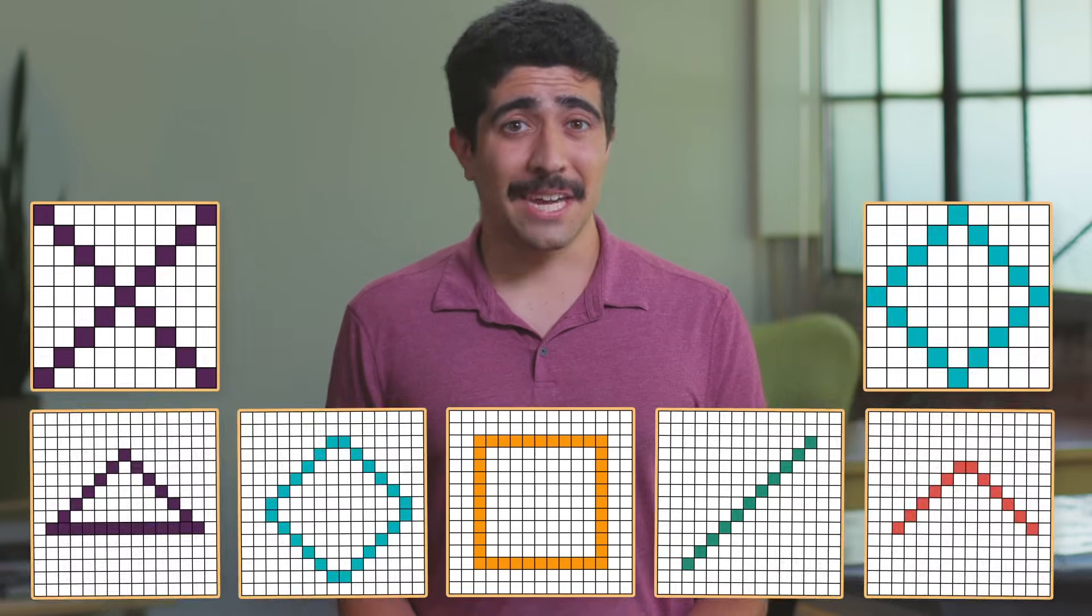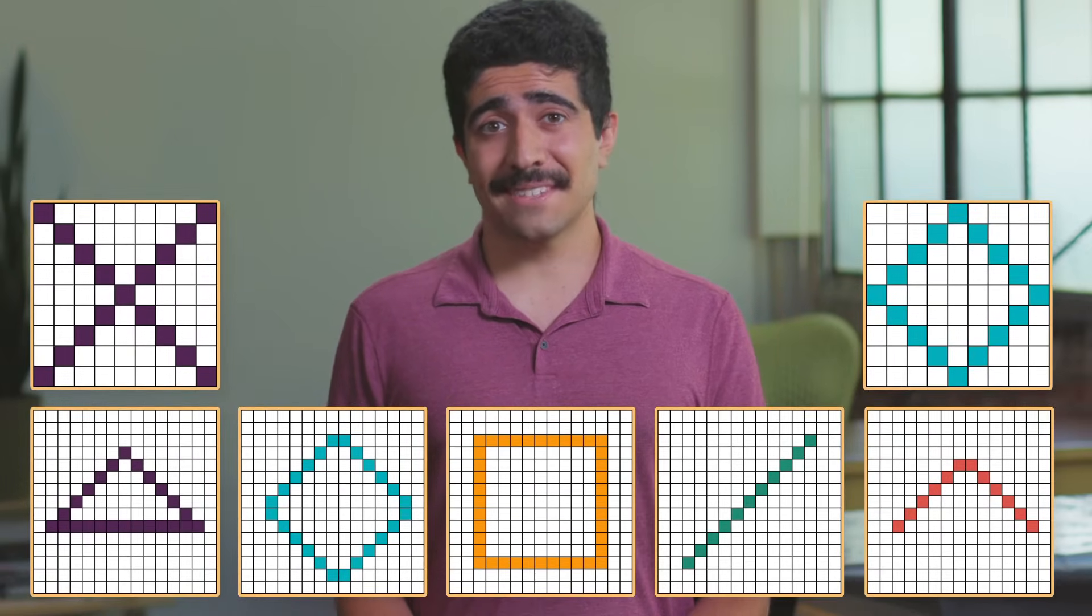It may seem easy to tell the difference between an X and an O, or to even categorize basic shapes, but most images aren't that simple. Let's take a look at how computer vision can learn to recognize complex images, or scenes like ones in the real world.